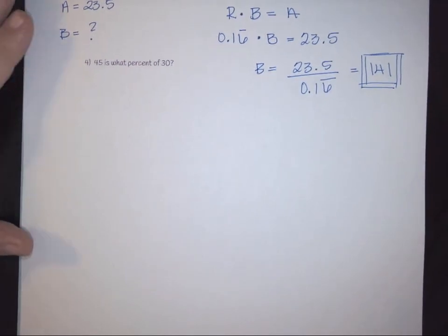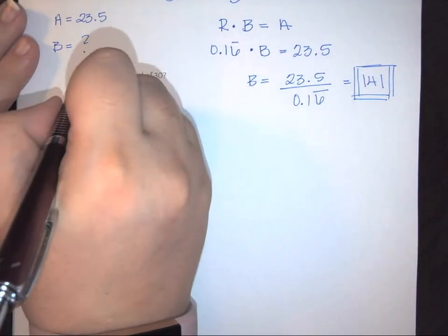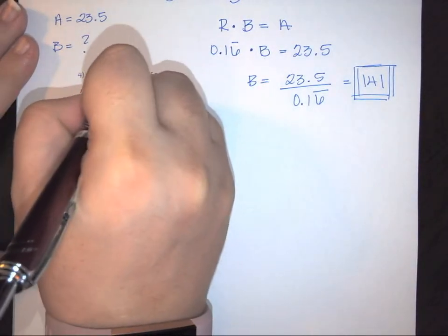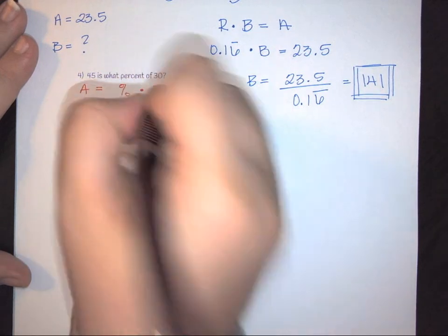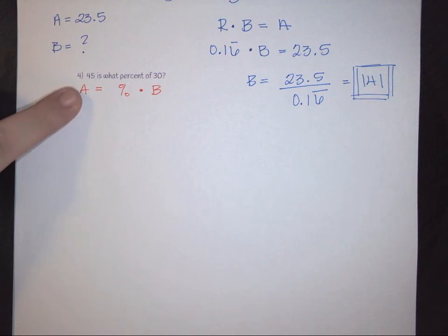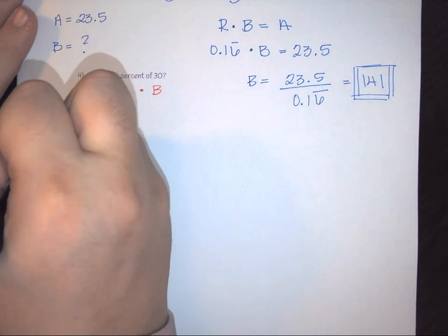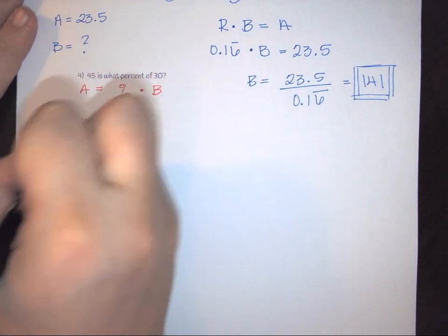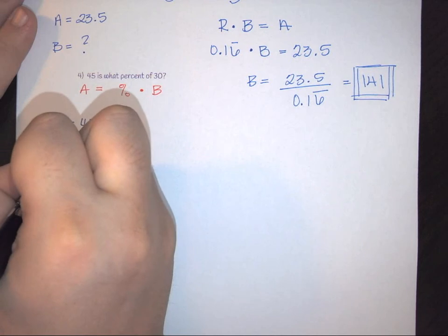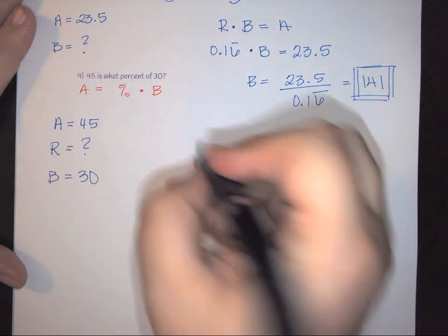Now last I have 45 is what percent of 30. So again, we have A is percent of B. So notice for each of these, even though each equation or sentence we've looked at, we have been able to rewrite them in the form of our equation here by using the definition of each part. And so here we have that A is going to be 45. My percentage is the unknown piece. And my B is 30.